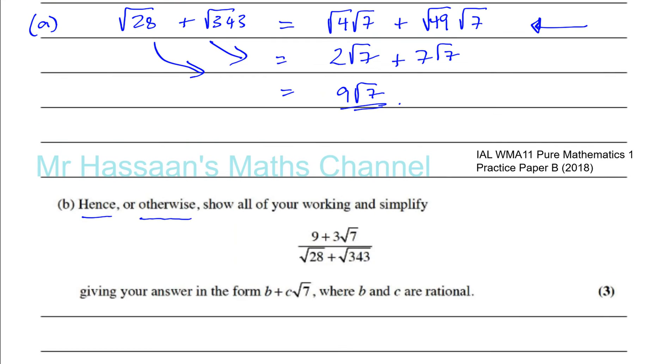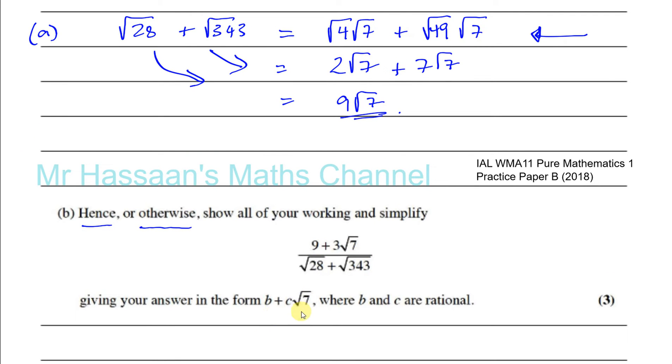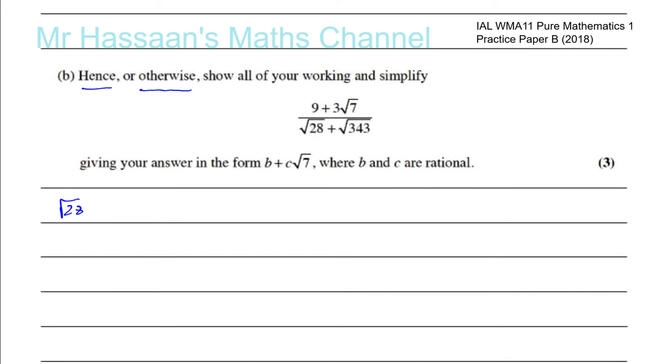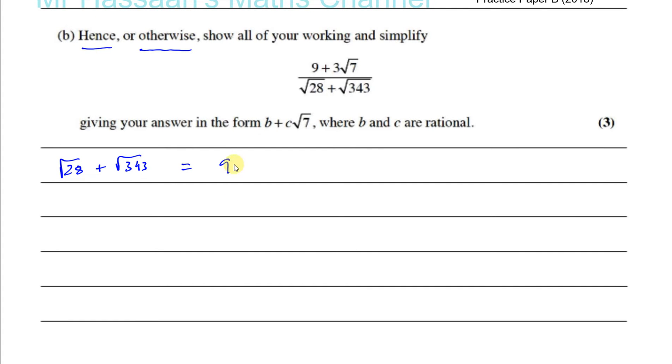And what you'll notice is the denominator of what we have to simplify is exactly the same as the expression that we had to simplify. So you can simply say that root 28 plus root 343 is equal to 9 root 7. So you could just simply replace that, so 9 plus 3 root 7 divided by 9 root 7. This expression becomes that, you just replace the root 28 plus root 343 with 9 root 7.